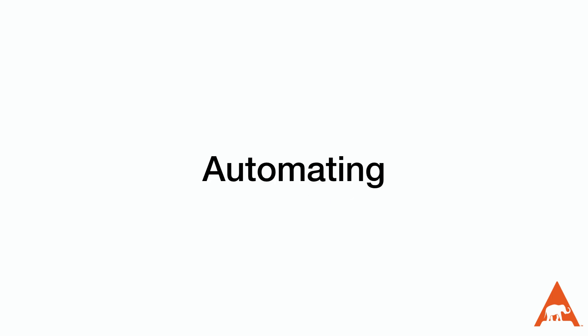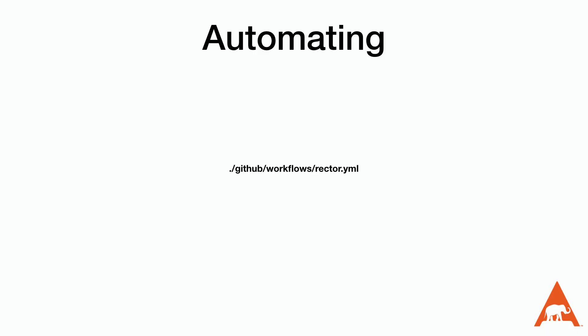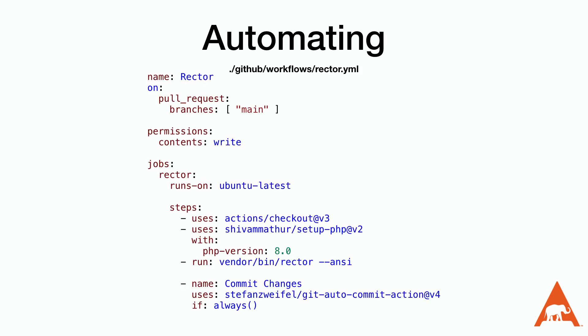So far we've run Rector manually from the command line, but I want to automate everything I can so I don't forget to perform these critical steps. To do so, we can set up a GitHub Action to automatically run Rector and commit the results directly to our repository. You can either create this as its own GitHub Action or add it as the first task in your current pipeline. I'm going to assume that you don't currently have one, but check out our video on how to use GitHub Actions to test your code.